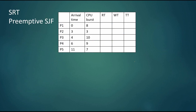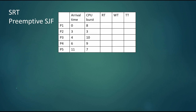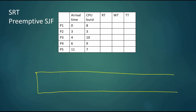Now let's move on to the next exercise: shortest remaining time, or shortest job first preemptive. We'll use five processes again and build a Gantt chart. You have to keep track of whether an arriving process has a shorter CPU burst than the remaining time on the currently executing process — if so, it will preempt.